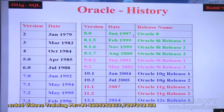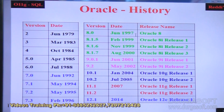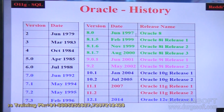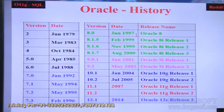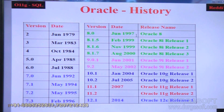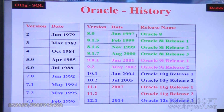Let us start with the introduction part of Oracle or SQL. First, the Oracle history. Oracle has released version 2 directly in 1979, so we do not have Oracle version 1. They have started officially with version 2 directly into the market.